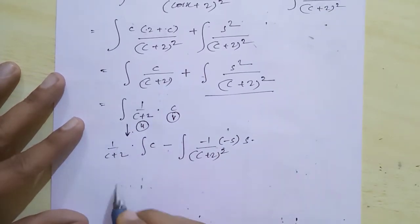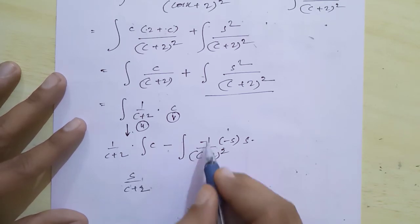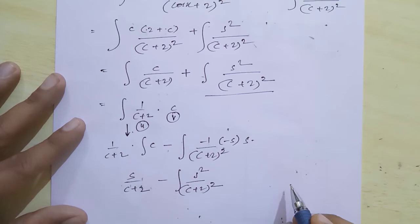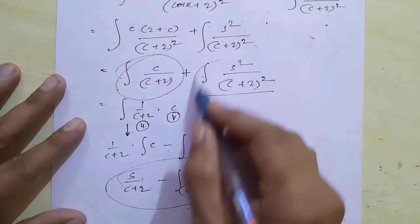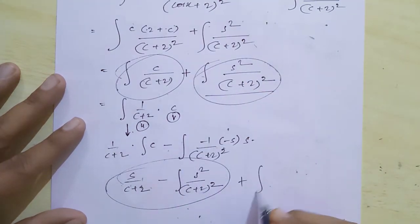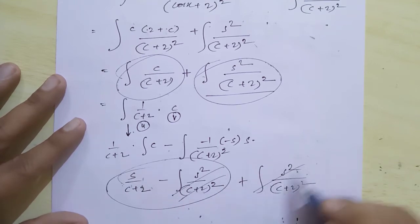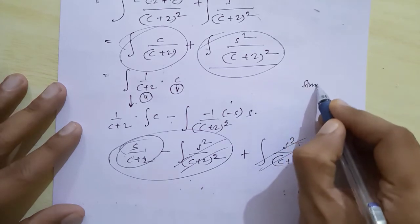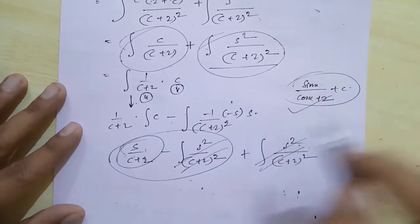Applying integration by parts: 1/(cos x + 2) · integral of v dx minus integral of u' · (integral of v dx) dx. This gives sin x/(cos x + 2) minus negative, so plus, but here the negative integral of sin x · sin x = sin² x/(cos x + 2)². The added integral of sin²/(cos x+2)² has negative and positive terms that cancel out, leaving sine x/(cos x + 2) + C. This is the required answer for Q40.